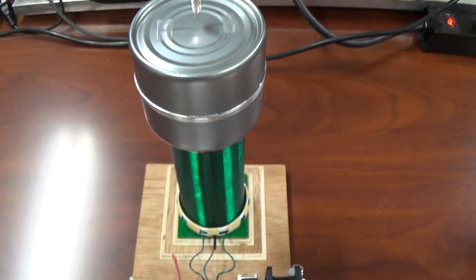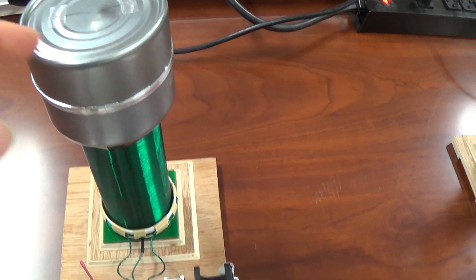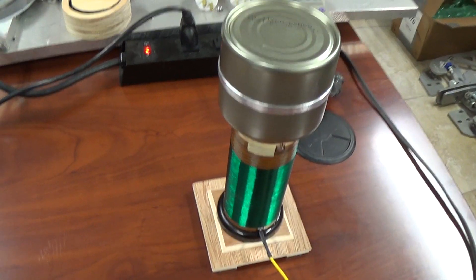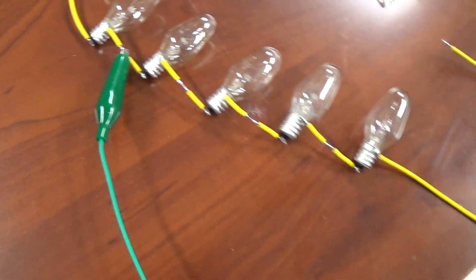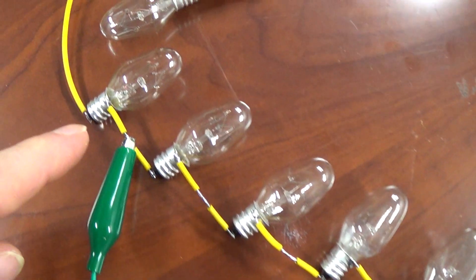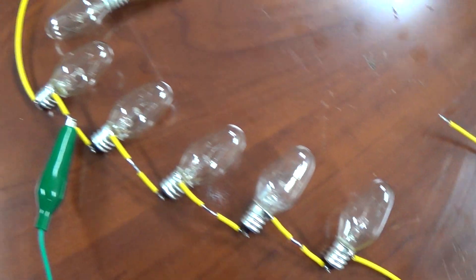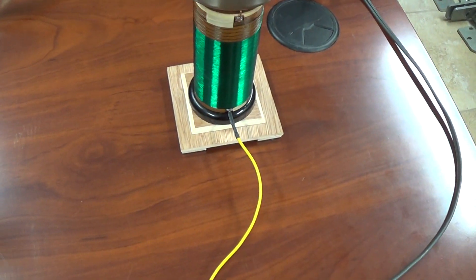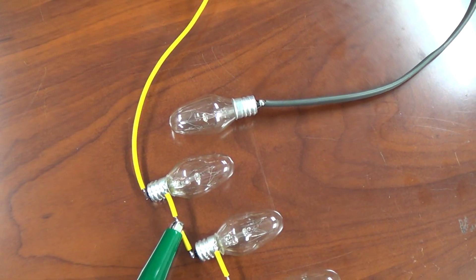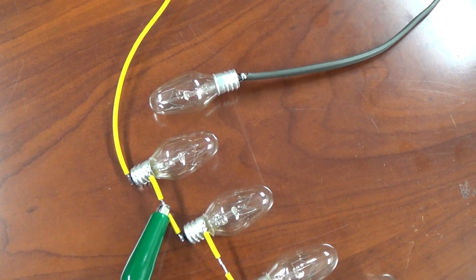We have a secondary Tesla coil with the same top capacitance and we have loads here with different connection points, different taps if you want. We're going to be doing some power measurements which haven't been done yet, and I believe I've come up with a way to do some accurate power measurements.